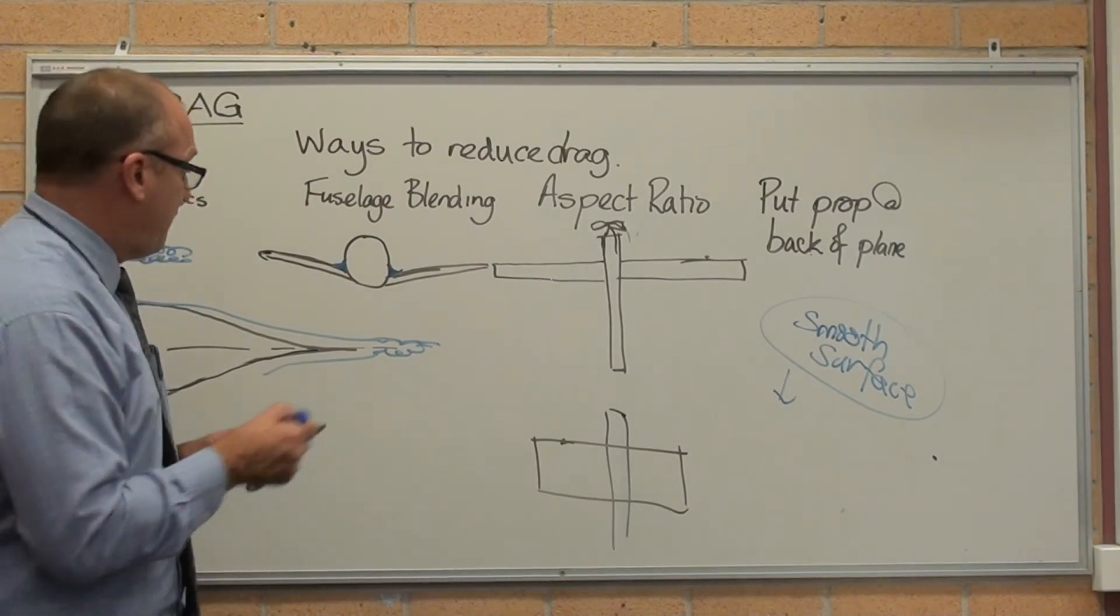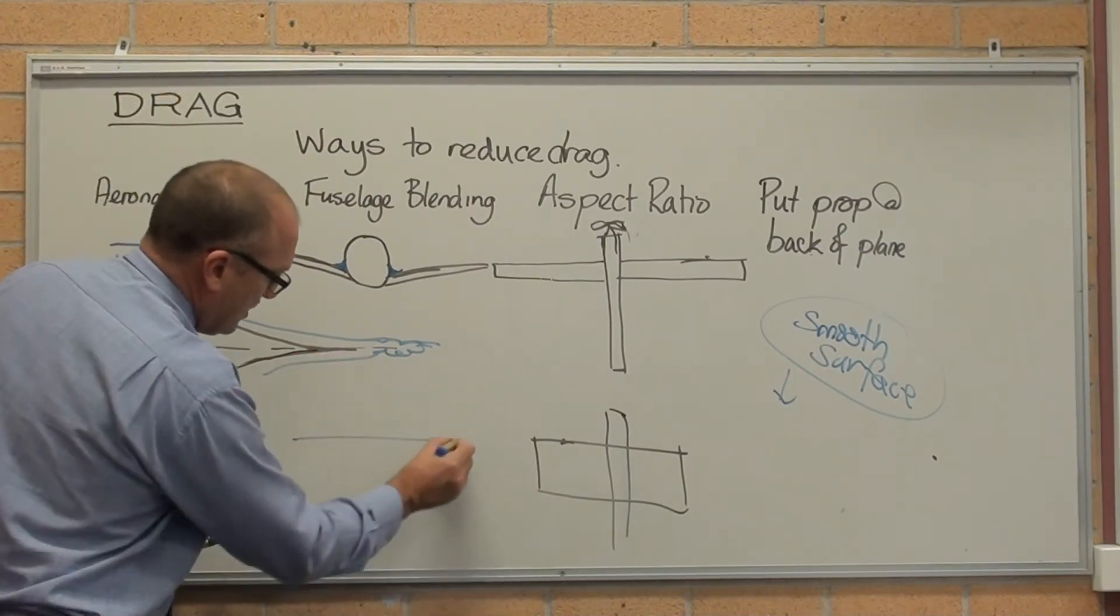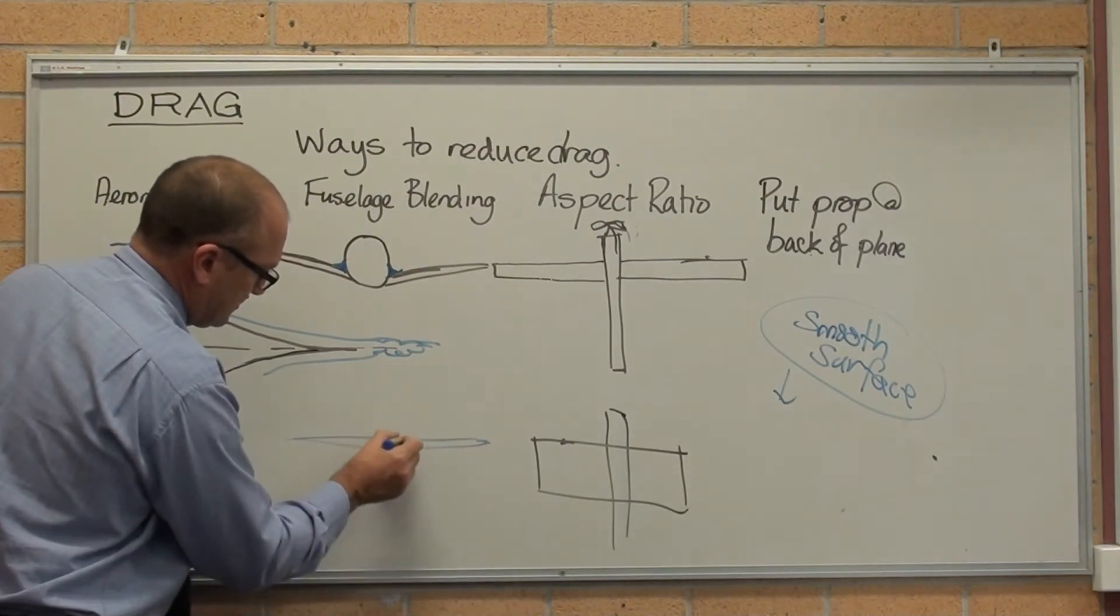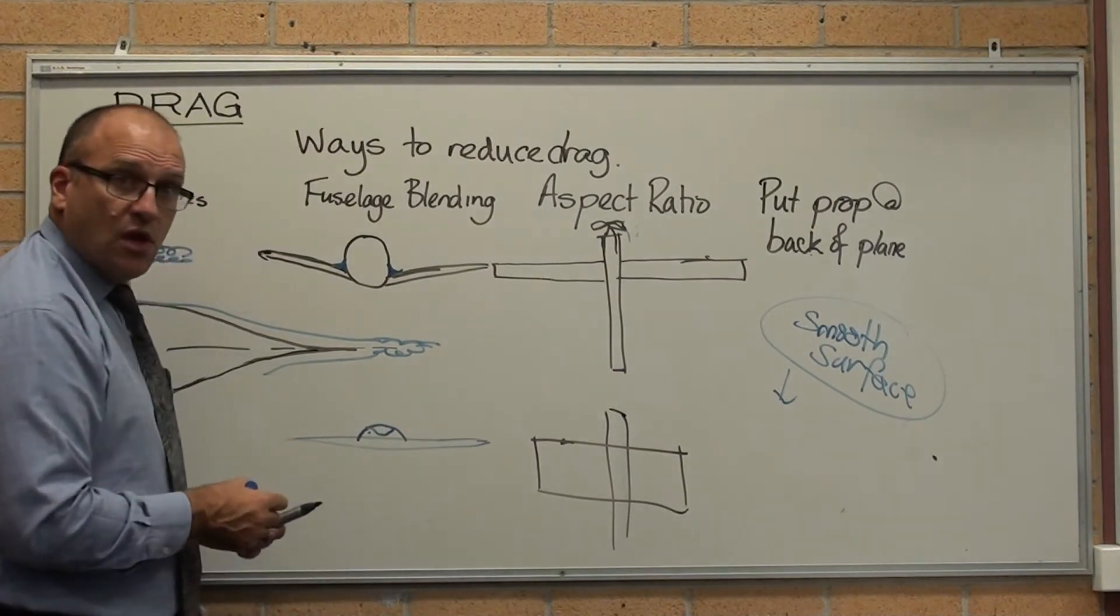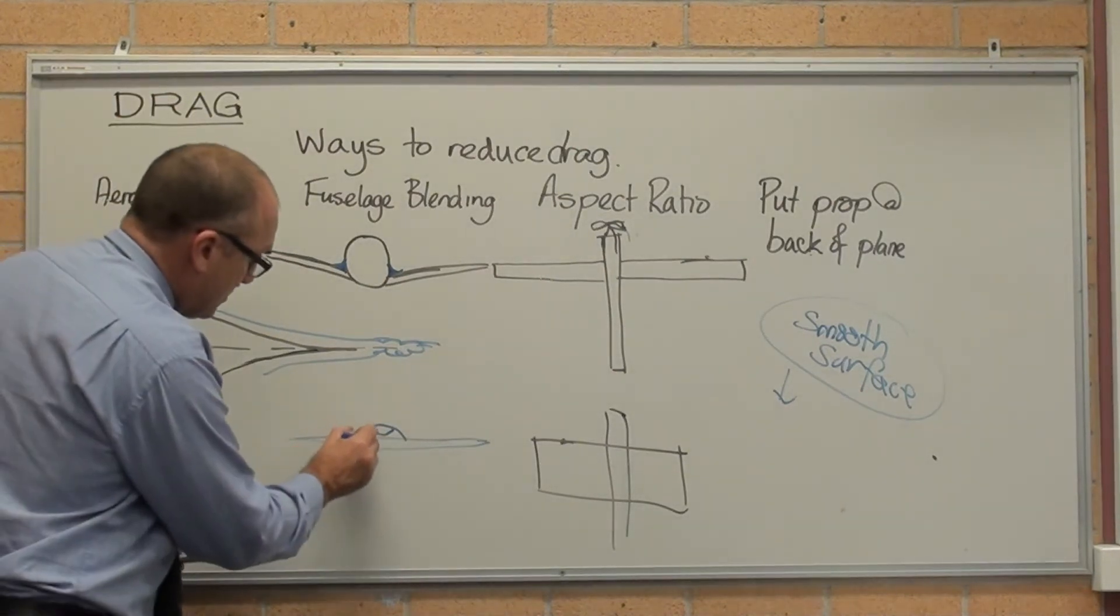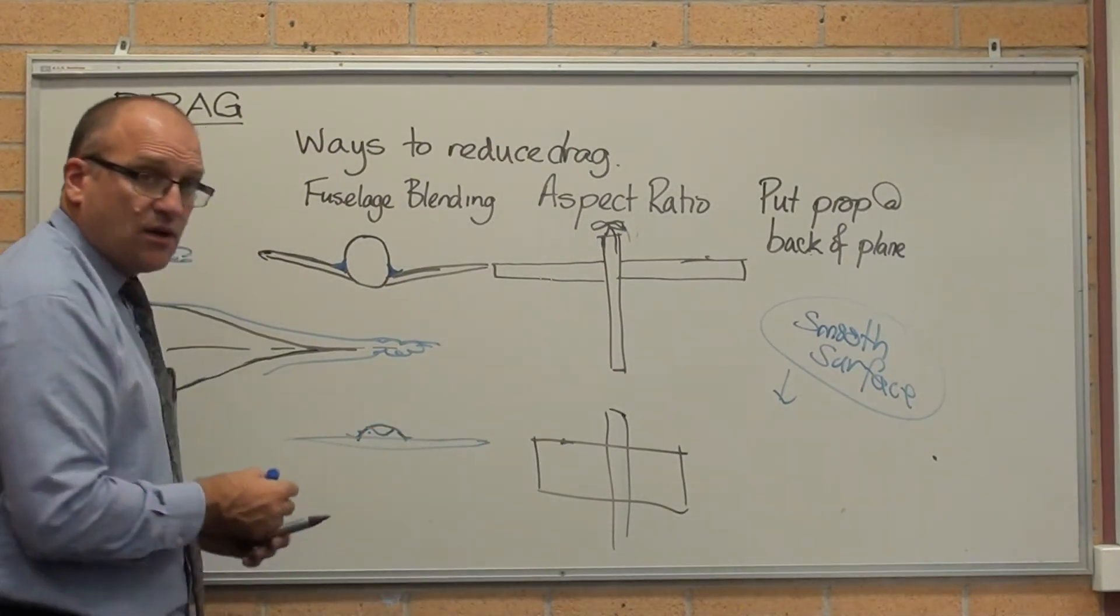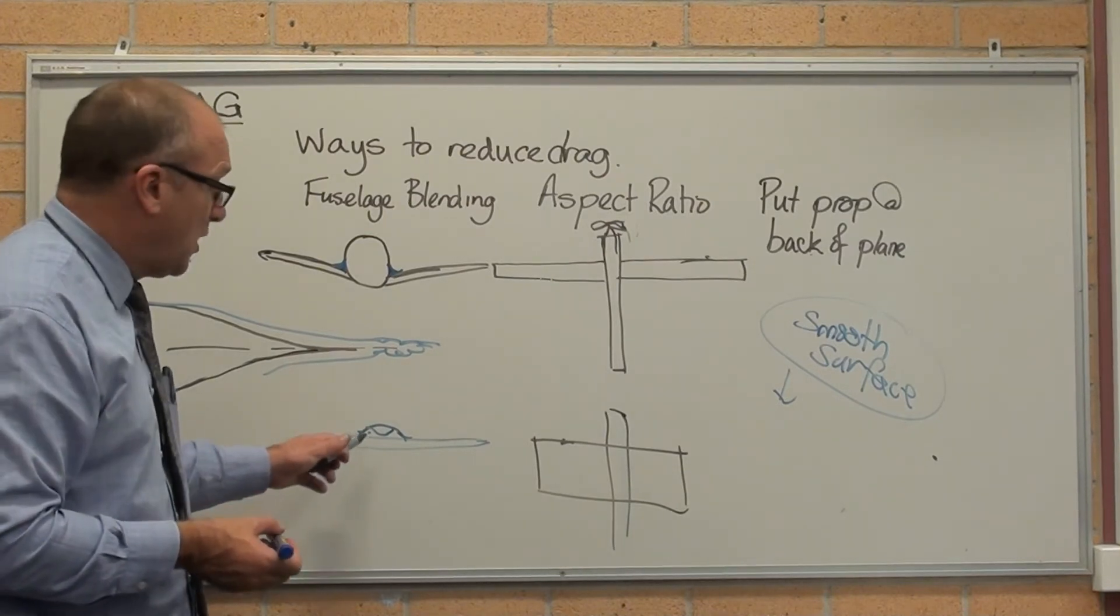Think about what a fighter jet looks like straight on. There's your wing. Front on, a fighter jet looks like that. Smooth surfaces. And it's also designed so the fuselage gives you extra lift as well.